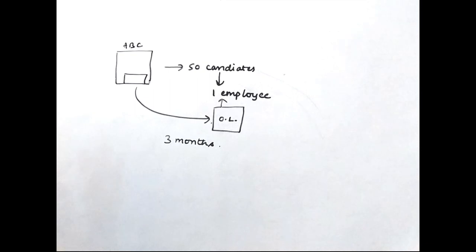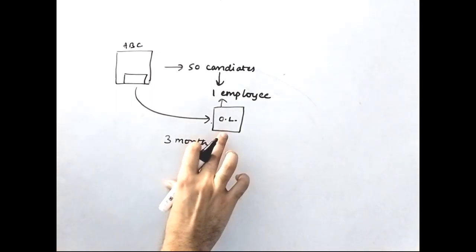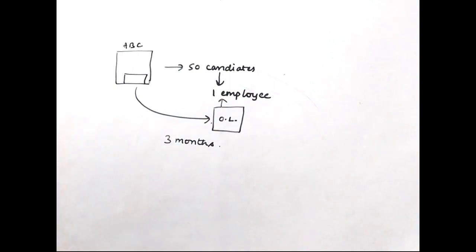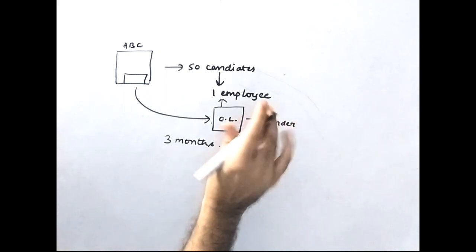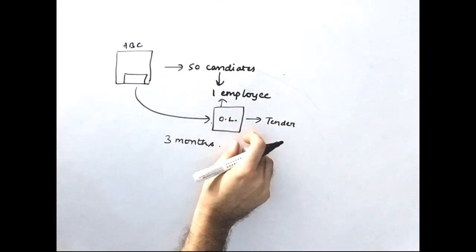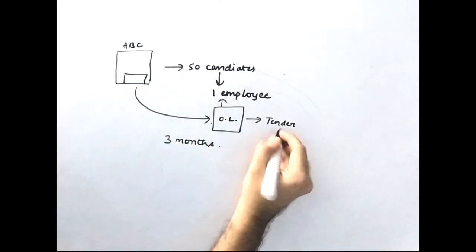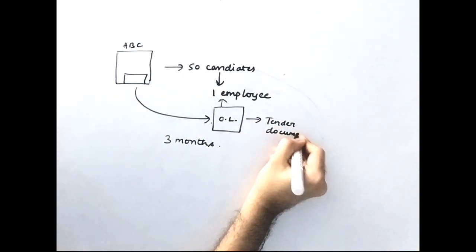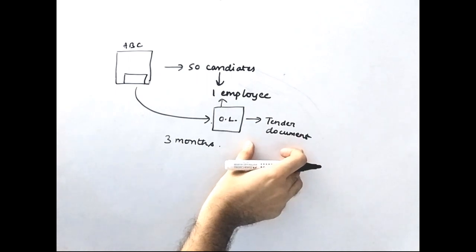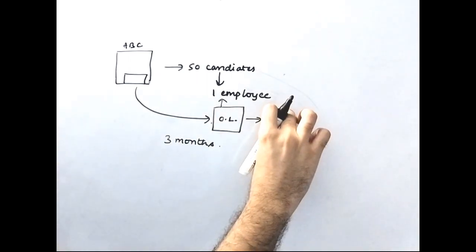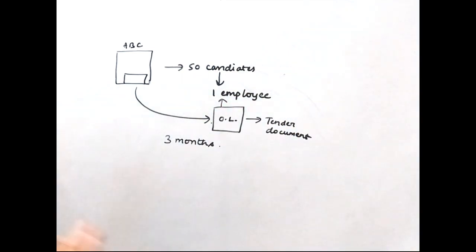If he leaves the company before three months, he has to pay a bond amount. The offer letter also mentions his salary, perks, and allowances, and that he has to serve a notice period before resignation. Now, this offer letter is nothing but a tender document. Before the employee signs this offer letter, this particular document is a tender document.